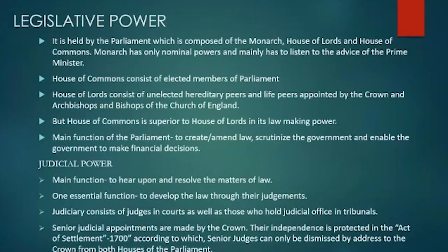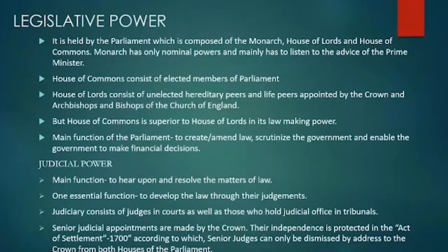The judicial power of the UK: the main function of the judiciary is to hear and resolve matters of law, and an essential function is to develop the law through judgments. The judiciary consists of judges in courts, those who hold judicial office, and tribunals. Senior judicial appointments are made by the Crown and their independence is protected in the Act of Settlement 1700, according to which senior judges can only be dismissed by address to the Crown from both houses of parliament.